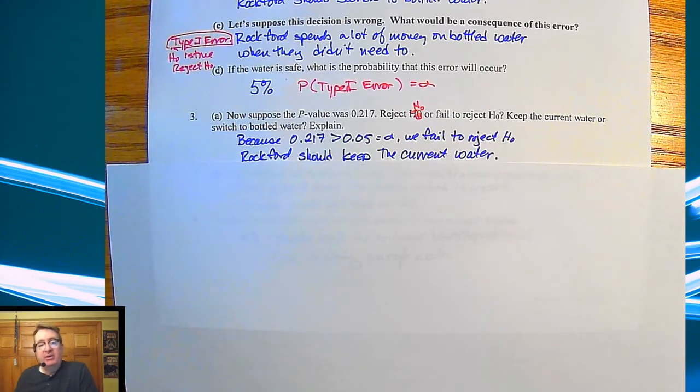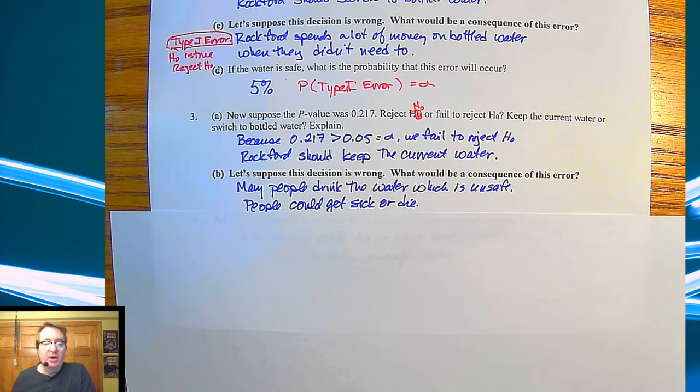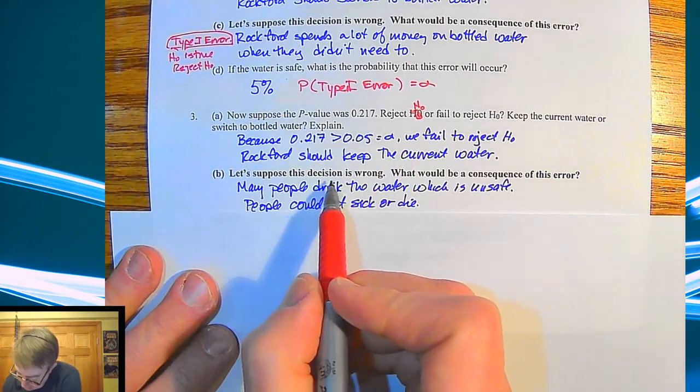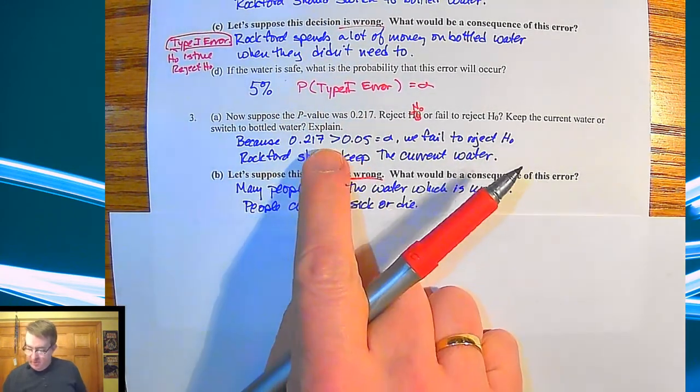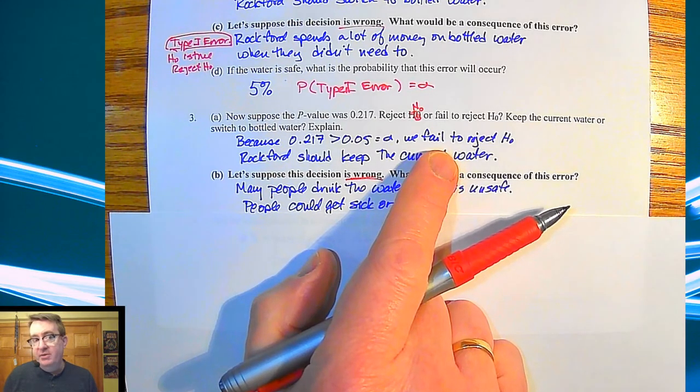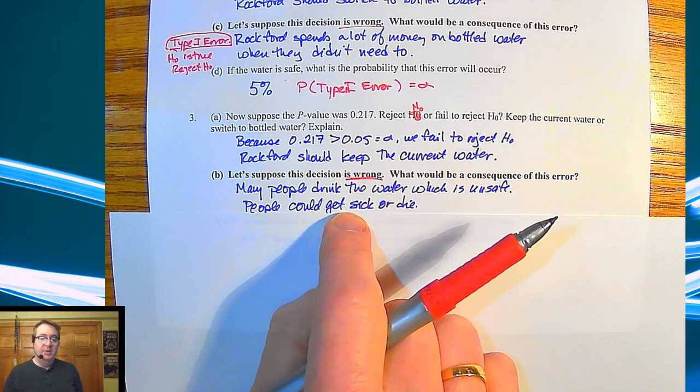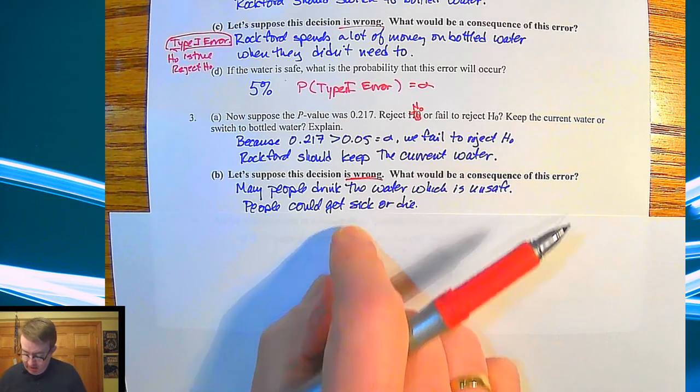Now, what happens here if we're having a problem? What happens again, if we just happen to have hit a certain number that works? So again, here, what happens if this decision is wrong? People drink the water, which is unsafe, because again, remember, we're saying what happens if this decision is wrong? So we're saying we failed to reject the null hypothesis. So that means that we're working under the assumption that the water is safe, but it really isn't. So people are drinking unsafe water, and people could be getting sick or even die.